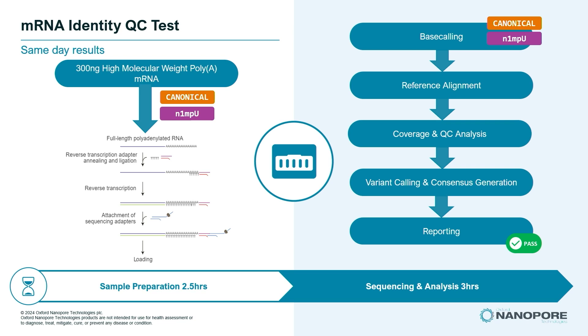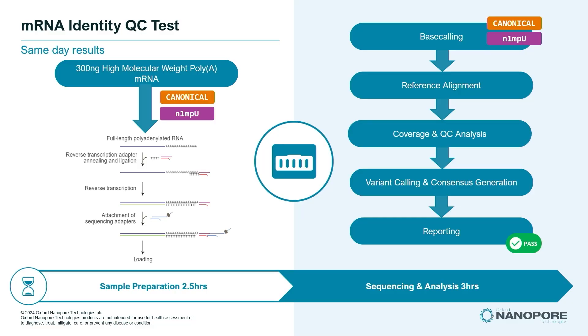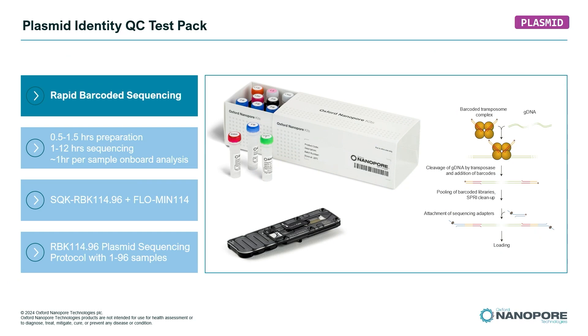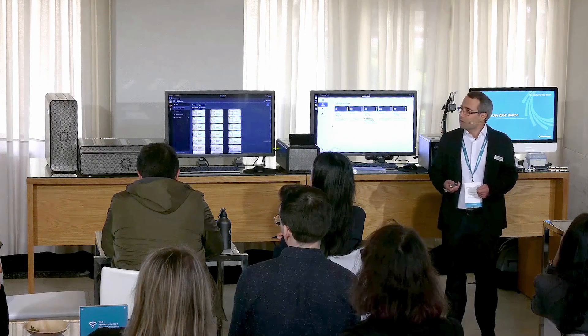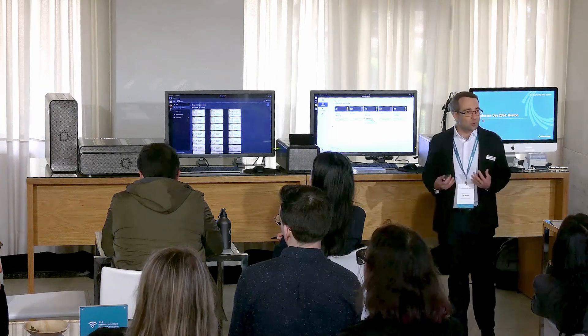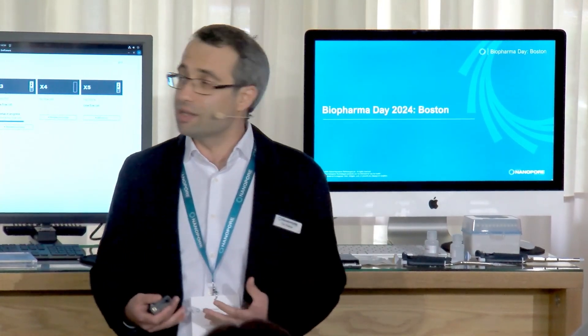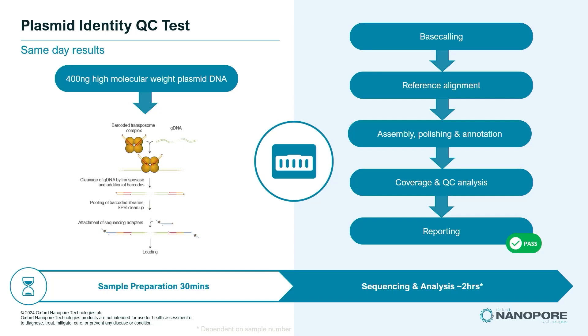You can get the highest quality data for these modified transcripts. The pipeline will align this data to a reference to generate a consensus, call variants, and then produce an easy-to-understand report listing various attributes about your sample, including its identity and integrity. Our plasmid QC test pack uses our latest generation of rapid barcoding chemistry, which can allow you to sequence up to 96 plasmid samples on a single flow cell using minimal additional equipment and time. The prep time for a single sample is as little as 30 minutes. After base calling, the data is aligned to a reference and your plasmids are assembled and annotated to produce a QC report on the identity of your plasmid.